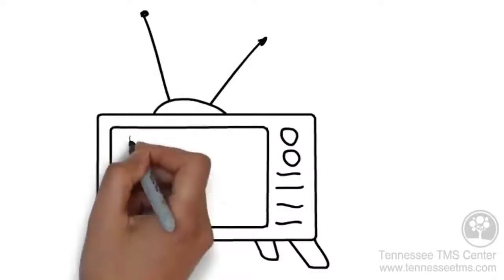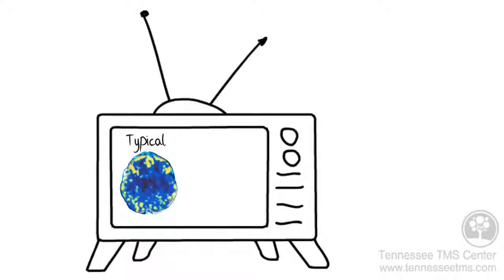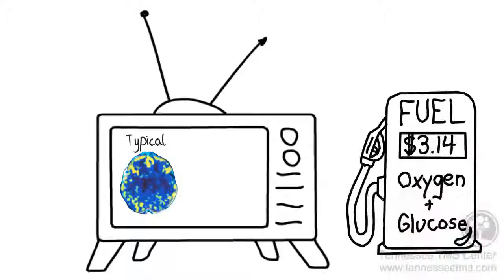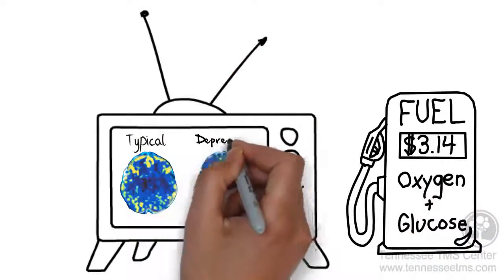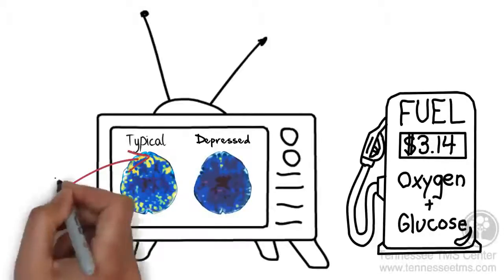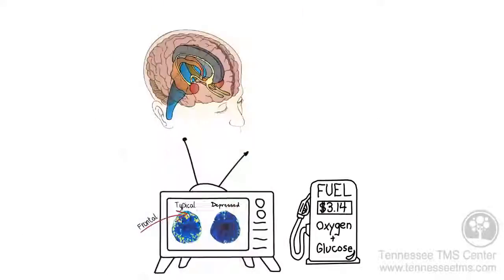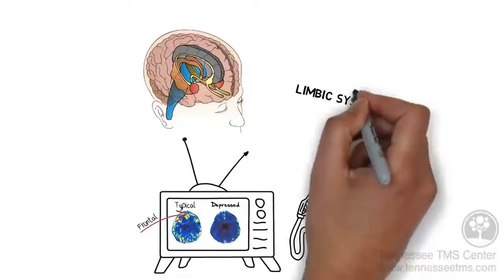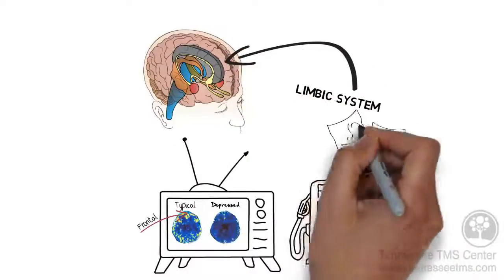Here's a functional PET scan of a typical brain. These researchers labeled to light up oxygen and glucose, which acts as the fuel for our cells, in order to see what areas of the brain are working. This is an equivalent scan of the brain of someone with depression. By comparison, the typical brain has more activity in certain regions, like the frontal lobe, but most importantly, in the central areas where our limbic system is. The limbic system is the emotional center of our brain.